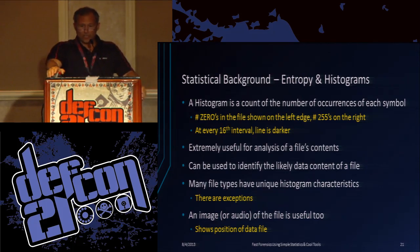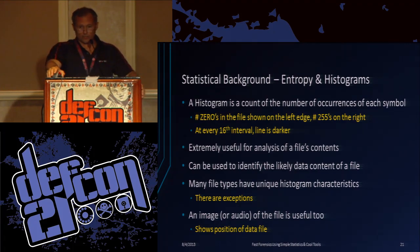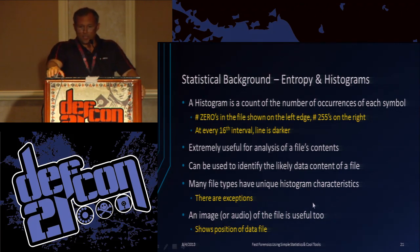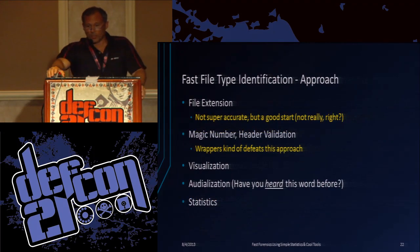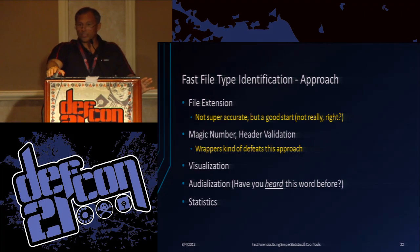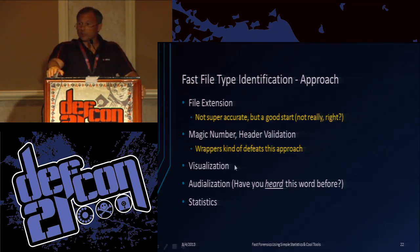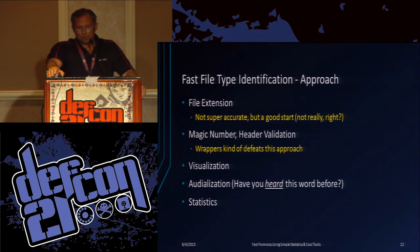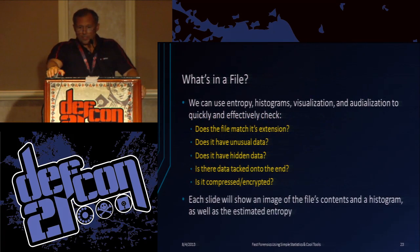The histogram — on the left side of the chart is the zero count, on the right side is the 255 count. The darker lines are at 16-value intervals. Many file types have unique histogram characteristics, and you can identify them very quickly in many cases. Here's how you identify a file: you look at the extension, but that doesn't mean anything. You look at the magic number — that may mean something if it's not disguised. We can apply a visualization — that's what this tool does. It will also do the audioization, which is actually a word out there. And then statistics. We check: what's in it, does it match the extension, does it have unusual data, hidden data, appended data, or is part of it compressed?